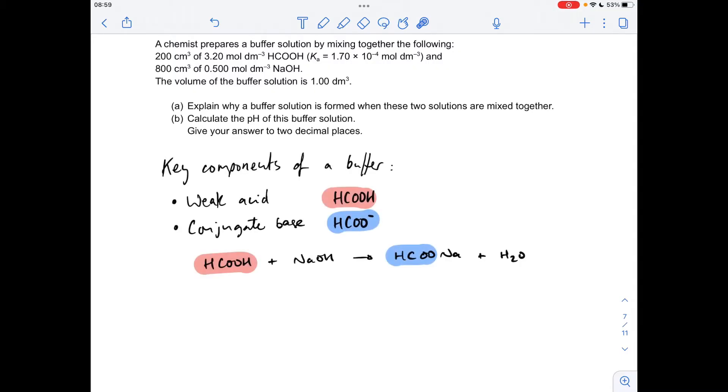Okay, so make a start and I'm sure you recognize this type of question from previous exam papers. We'll start by saying the key components of a buffer are a weak acid and the conjugate base of the weak acid. So in this case, we've got methanoic acid as our weak acid and the conjugate base would be the methanoate ion.